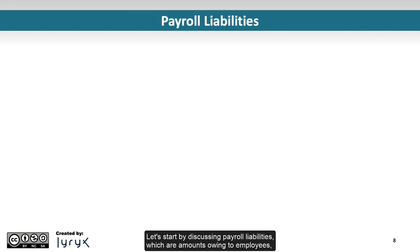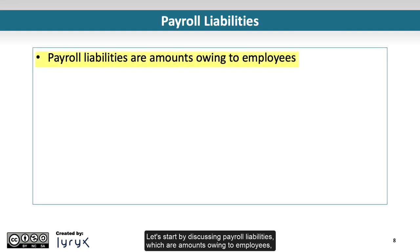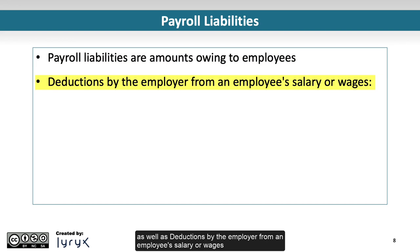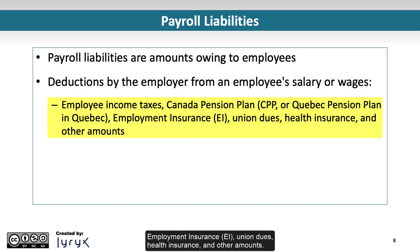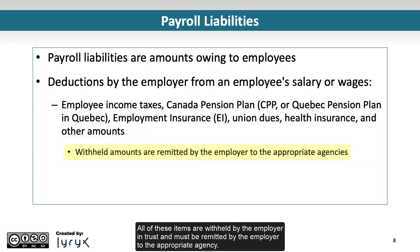Let's start by discussing payroll liabilities, which are amounts owing to employees, as well as deductions by the employer from an employee's salary or wages. These can include employee income taxes, Canada Pension Plan (CPP), or Quebec Pension Plan in Quebec, employment insurance (EI), union dues, health insurance, and other amounts. All of these items are withheld by the employer in trust and must be remitted to the appropriate agency.